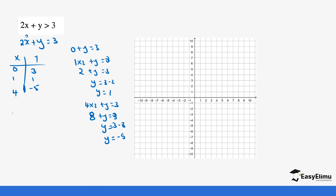So we have three points — you can get as many as you want. We have (0, 3), (1, 1), and (4, -5). We use these points to draw the line. Plotting: (0, 3) here, (1, 1) here, and (4, -5) here. You'll notice our line is falling — you can see how the line is moving naturally.